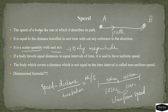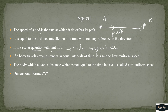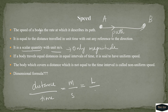The dimensional formula of speed: speed equals distance divided by time. Distance has dimension L, time has dimension T, so the dimensional formula of speed is M⁰LT⁻¹.